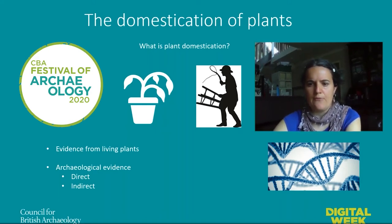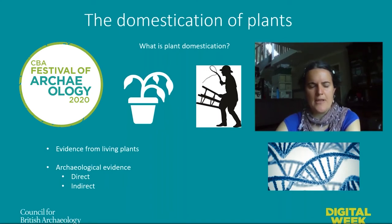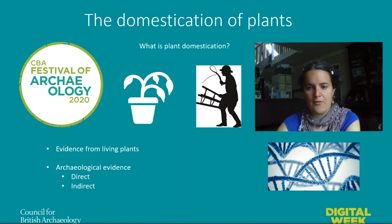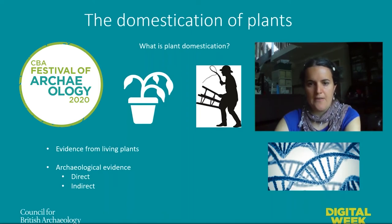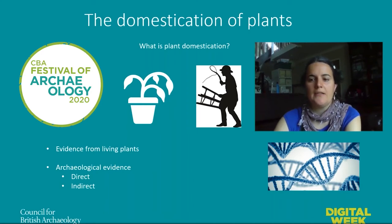This all sounds more like botany. Why am I, as an archaeologist, speaking about this? There are two main sources of information to study plant domestication in the past. One is through the study of living and modern plants and their genes, done by geneticists. The other is through the study of archaeological evidence, which can be either direct, such as cereal grains themselves, or indirect, such as artifacts, ancient DNA, and other archaeobotanical remains.